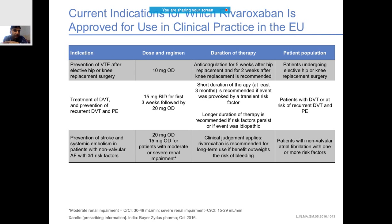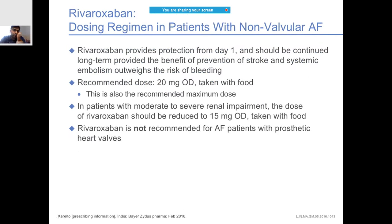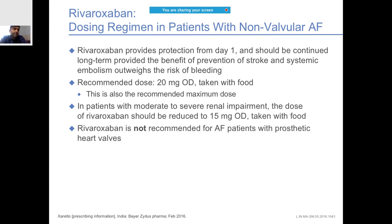For prevention of systemic embolism, give 15 mg only for patients with renal impairment; otherwise the standard dosage is 20 mg. For non-valvular atrial fibrillation, you must start and continue the therapy - you should not stop it in between. Start with 20 mg; go to a lower dosage only if the patient has renal dysfunction. If the patient has valvular AF or a history of rheumatic heart disease, rivaroxaban may not be advisable.